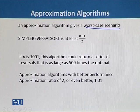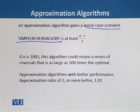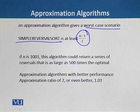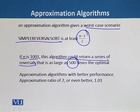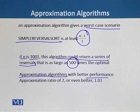The approximation ratio of the simple reversal sort algorithm is at least (n-1)/2. A biologist has no guarantee that this algorithm comes anywhere close to the correct solution. For example, if n is 1001, then this algorithm could return a series of reversals that is as large as 500 times the optimal solution.